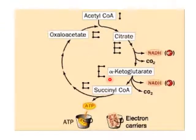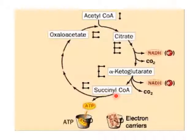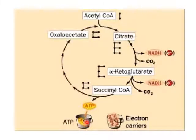This is the overview of Krebs cycle up to succinyl-CoA. Acetyl-CoA has two carbons; oxaloacetate has four carbons; they combine to form six-carbon citrate. One carbon leaves as CO₂, giving alpha-ketoglutarate; then another carbon leaves as the second CO₂, giving four-carbon succinyl-CoA. Up to this point, we have produced one NADH from isocitrate dehydrogenase, one NADH from alpha-ketoglutarate dehydrogenase, and one GTP converted to ATP.